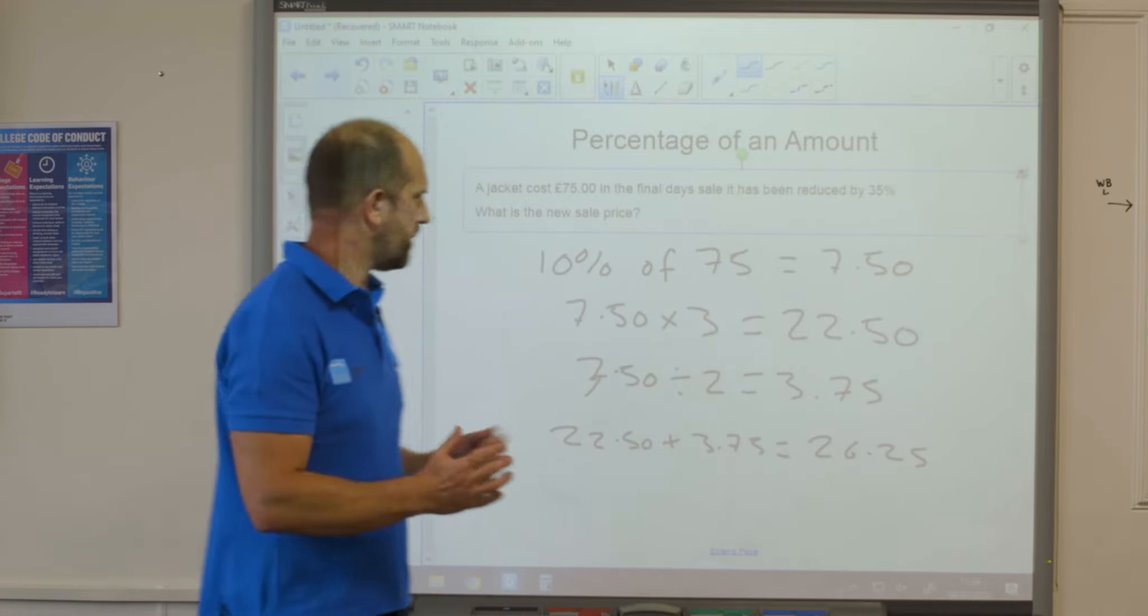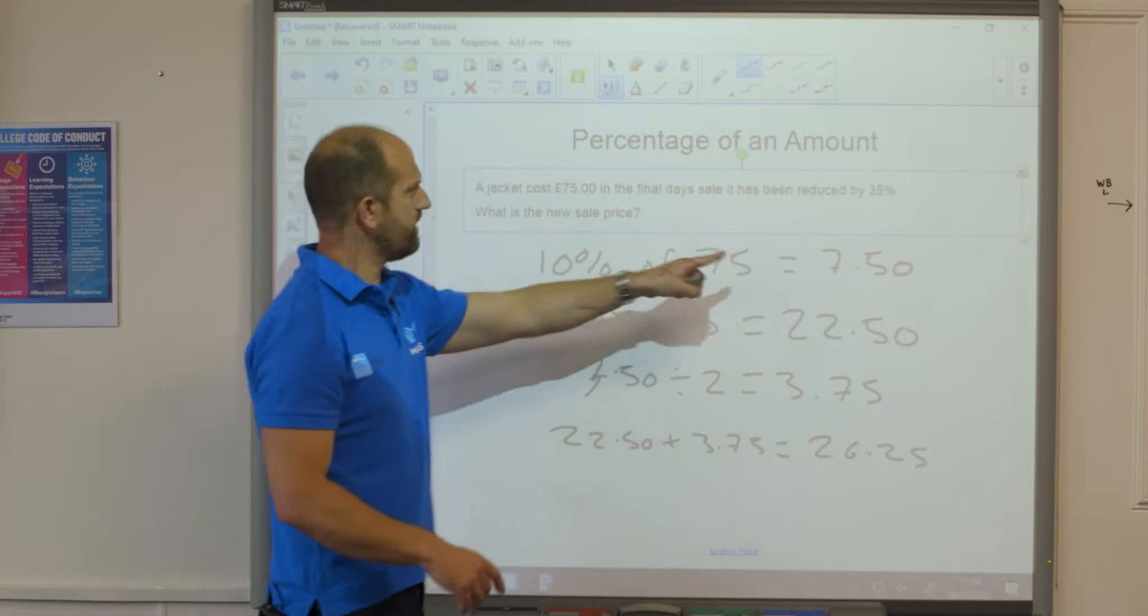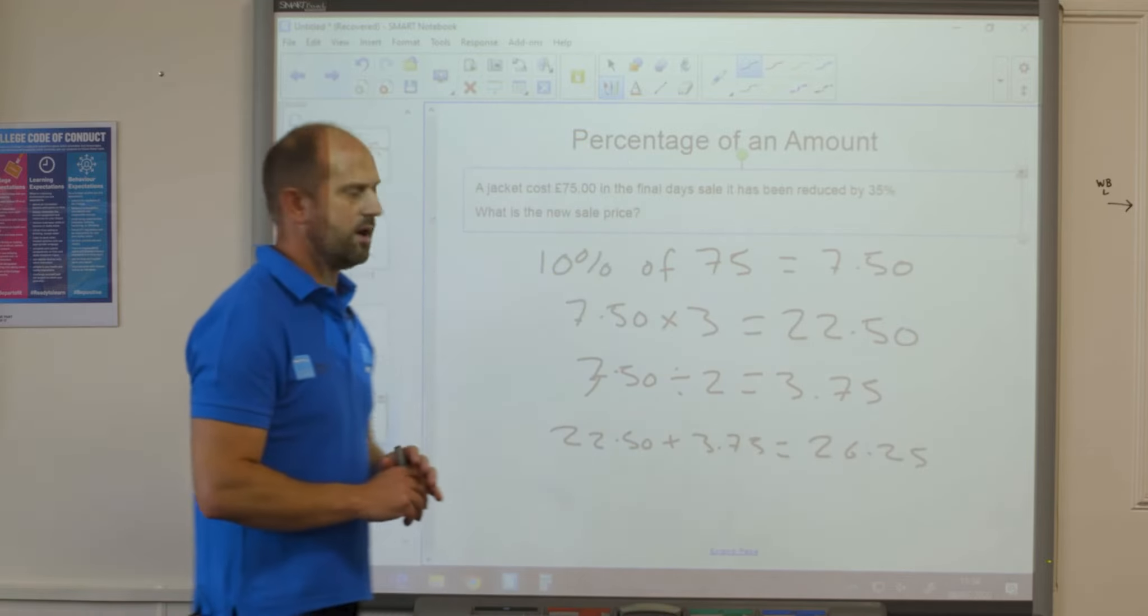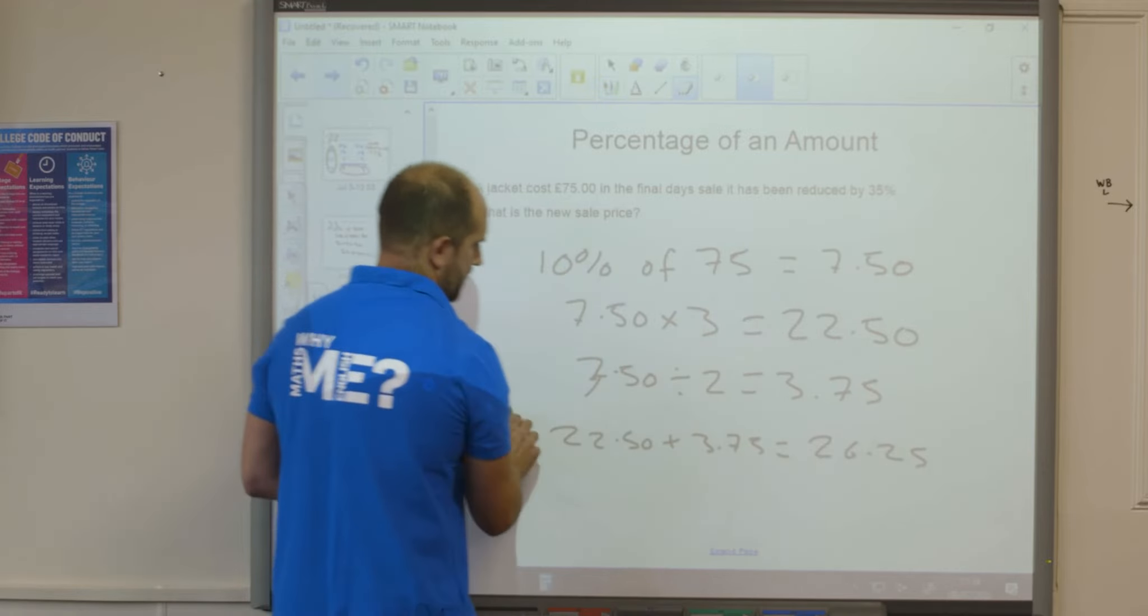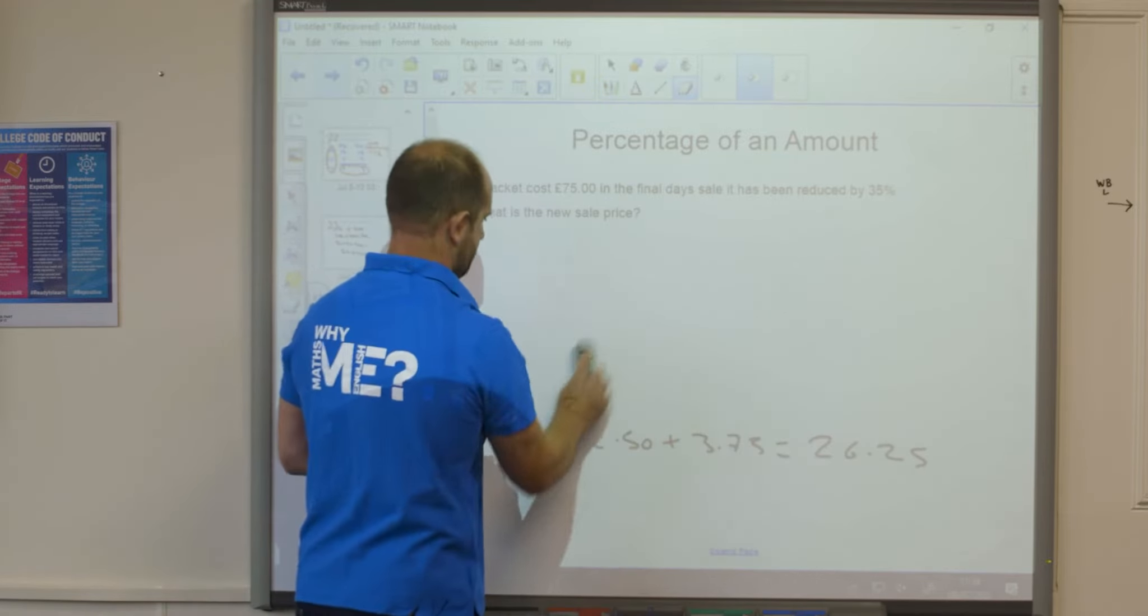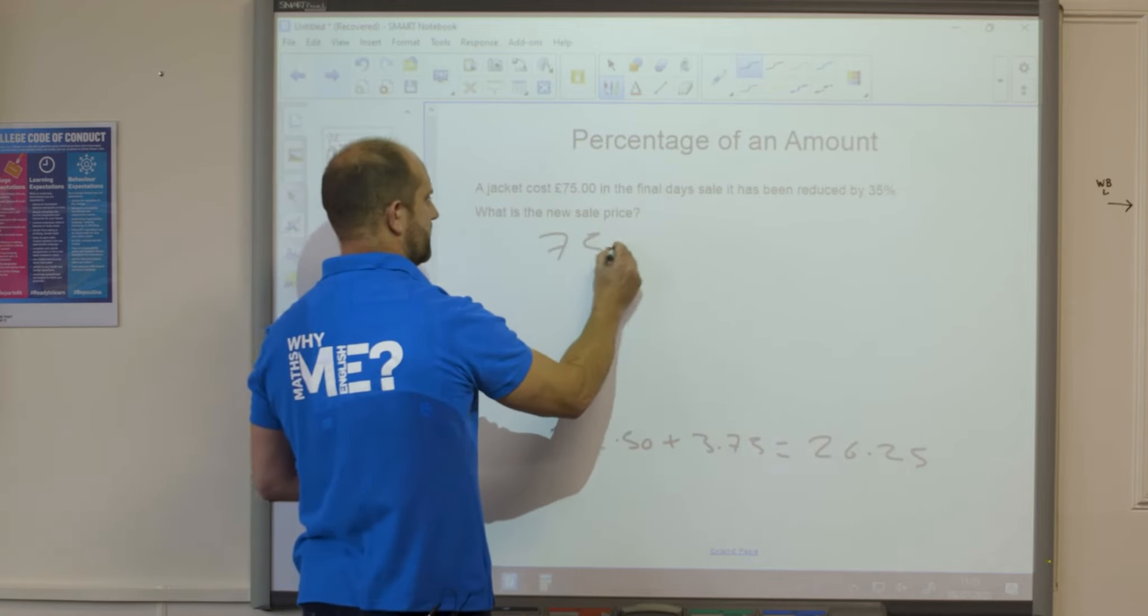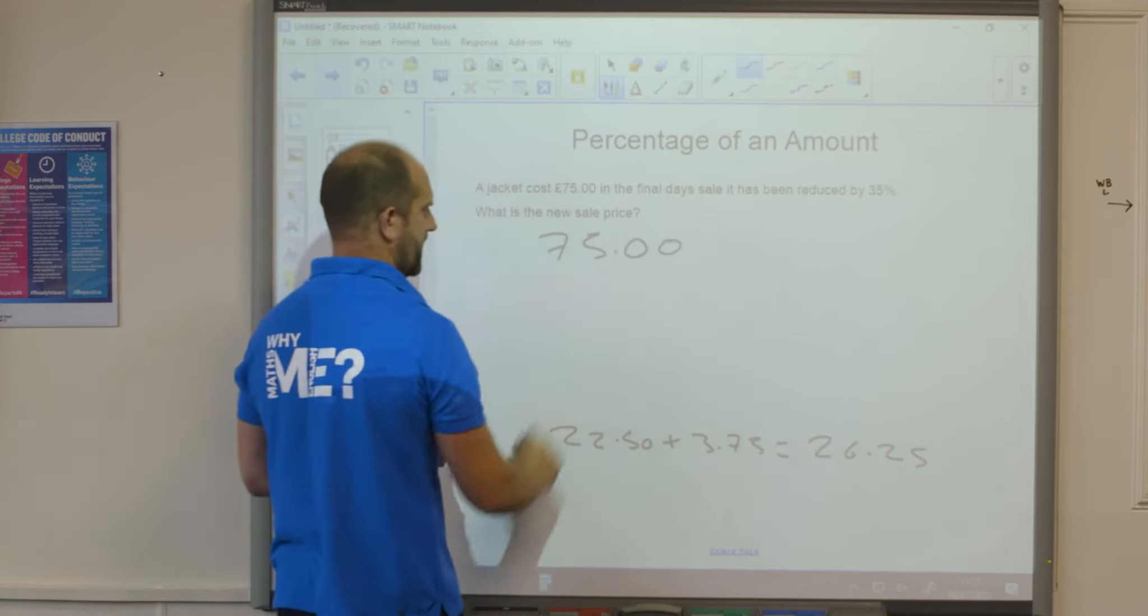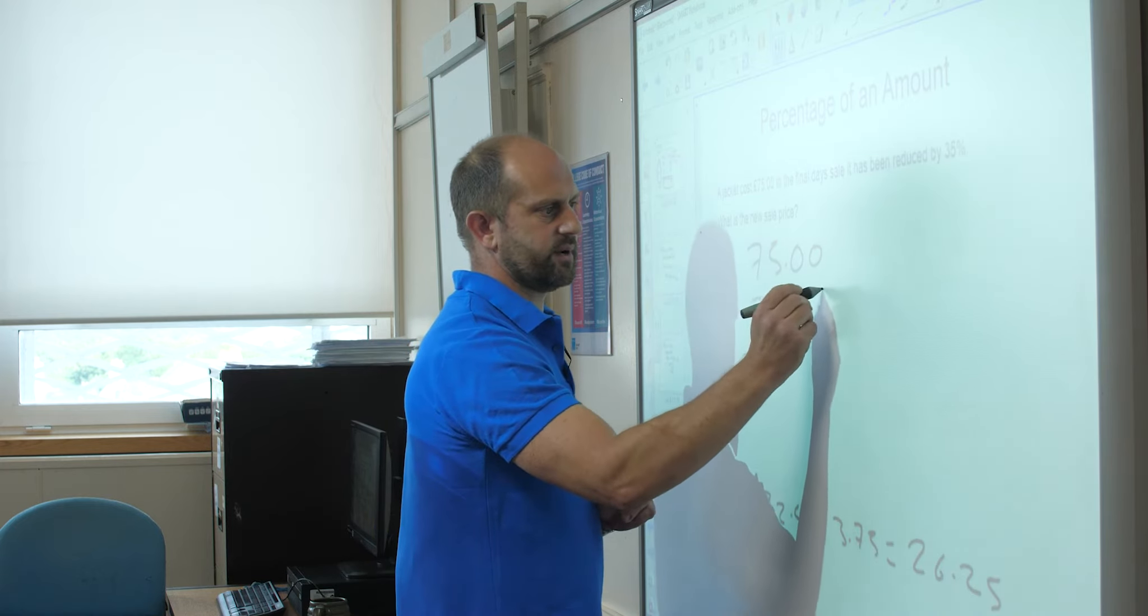That's what it's going to be reduced by. So the last thing I need to do now is take that away from my original sum of 75 pounds. So I've got 75 pounds, the original cost of my jacket, minus 26 pounds 25.